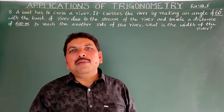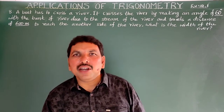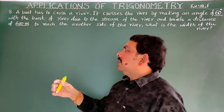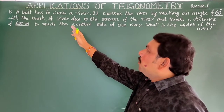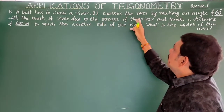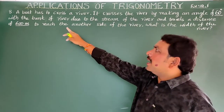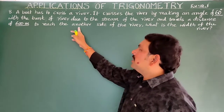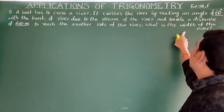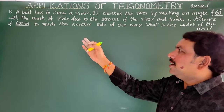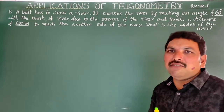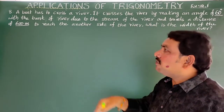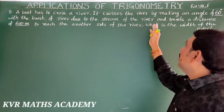First, the eighth question in exercise 12.1: a boat has to cross a river. It crosses the river by making an angle of 60 degrees with the bank of the river due to the stream, and travels a distance of 600 meters to reach the other side. What is the width of the river?